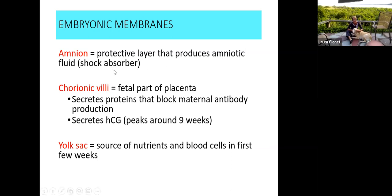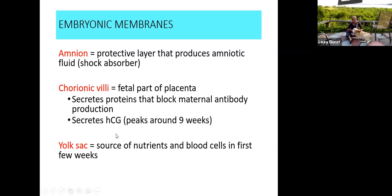From the trophoblastic cells that become the chorion and ultimately the chorionic villi — which is the fetal blood supply — human chorionic gonadotropin will be secreted. Then we have the yolk sac, which looks like a yolk sac from a chicken egg. It's a yellow sac that is the source of nutrients very early in development until the placenta is developed, and also an early source of blood cells within the first few weeks.